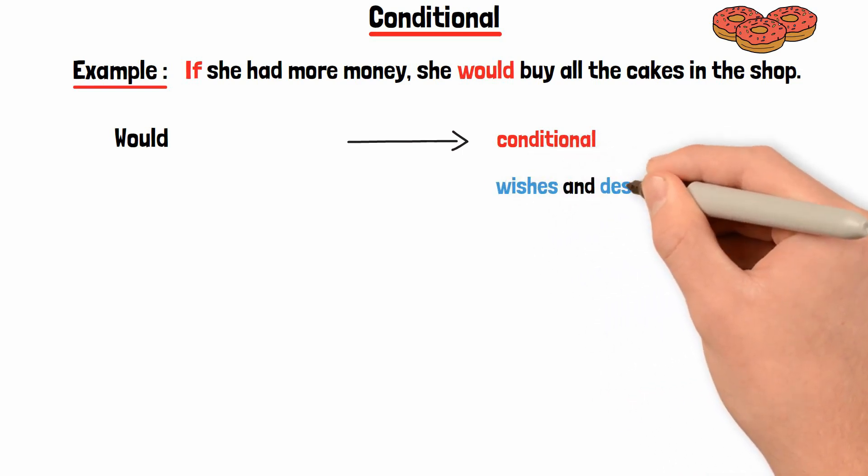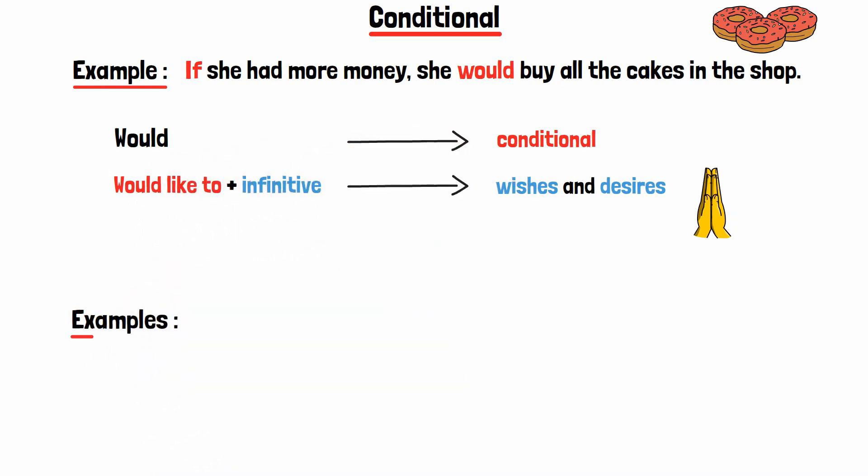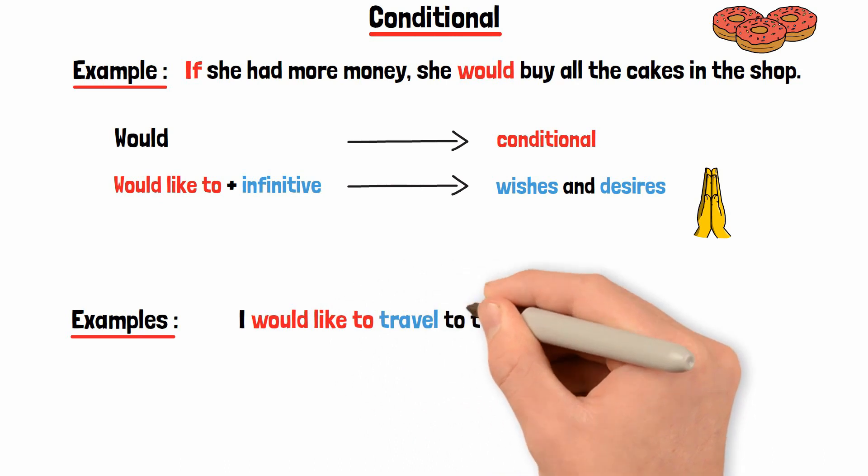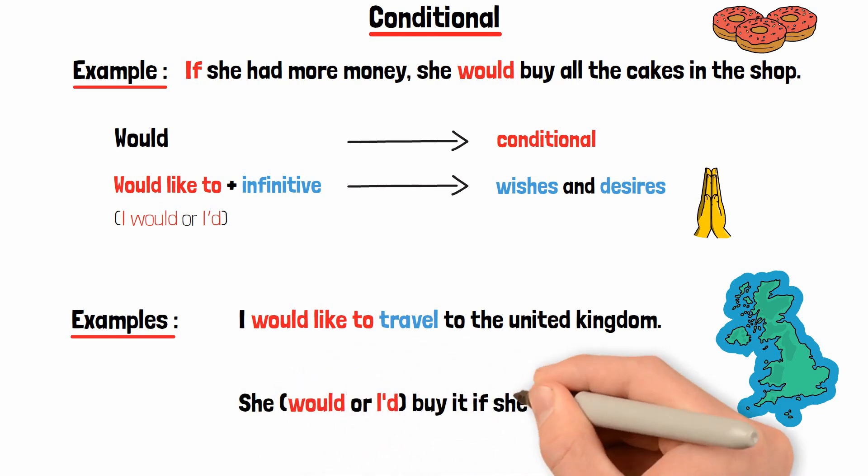To express wishes and desires, we employ would like to plus infinitive. I would like to travel to the United Kingdom. We can either say I would or I'd. She would buy it if she wanted to.